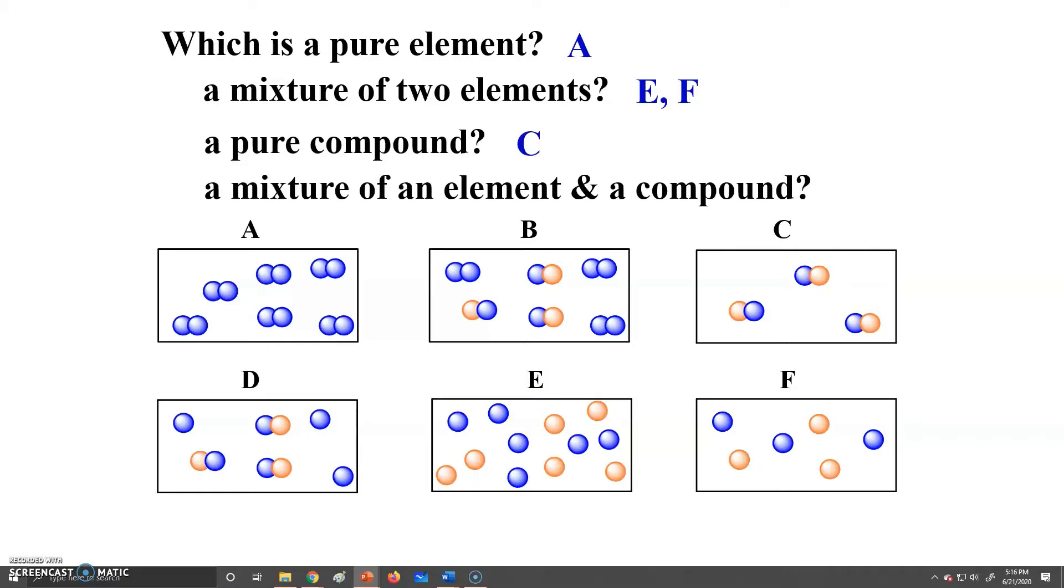And lastly, a mixture of an element and a compound. We can see those are going to be our last two, B and D, because we see one compound there, which is your red and your blue sphere together, and then an element could be either a single blue sphere, such as in D, or two blue spheres together. Because remember, an element can be diatomic, such as H2 or N2, so if it's the same atom bonded together, we still consider that an element and not a compound.